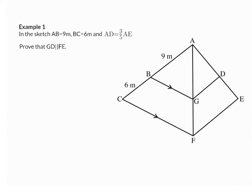Let's see how we can use this theorem. Example 1. In the sketch, AB is 9 meters, BC is 6 meters, and AD is equal to 3 over 5 of AE. The lengths of AB and BC are both already indicated on the picture, but that last bit of information is not on the picture yet. So if we focus on that first,